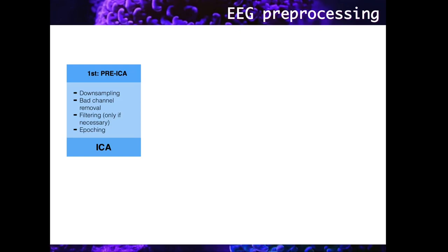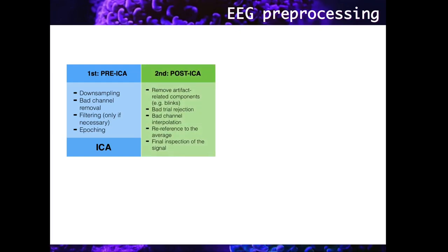Afterwards, the continuous EEG is segmented into epochs that contain the events of interest in the experimental design. At this point, an ICA is performed on the data, which allows to extract noise-related components. These will be detected and removed, generating a signal without contamination from eye blinks and similar noise. Trials with high levels of other sources of noise are also removed, and bad channels are interpolated. Finally, data is re-referenced to the average signal from all the channels and visually inspected to make sure that the final result is as clean as possible. Note that trial averaging, which is a required step for event-related potential analysis, is not a necessary prerequisite for multivariate analysis — this may or may not be done depending on the specific analysis performed.